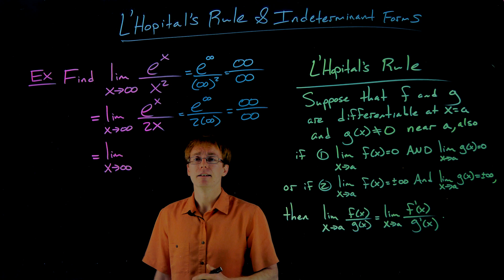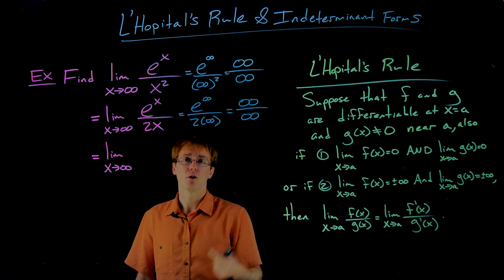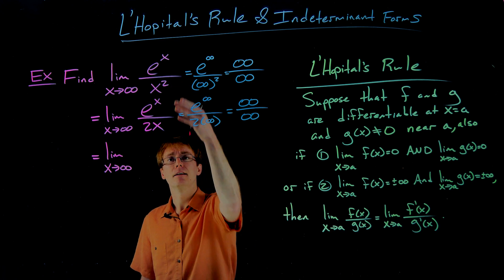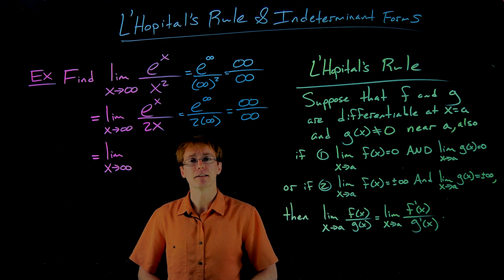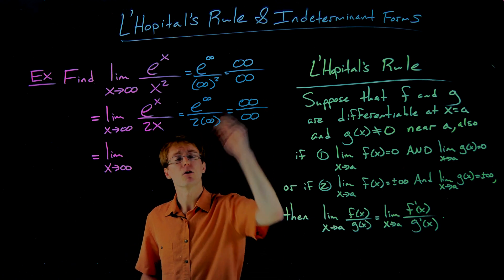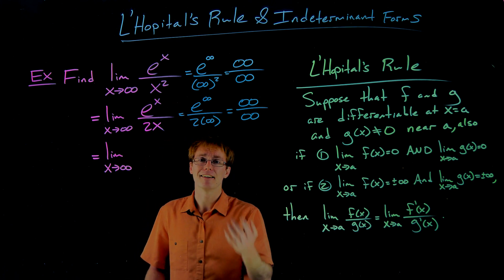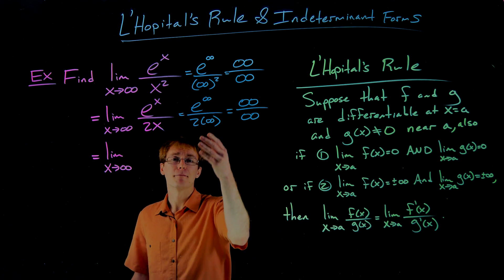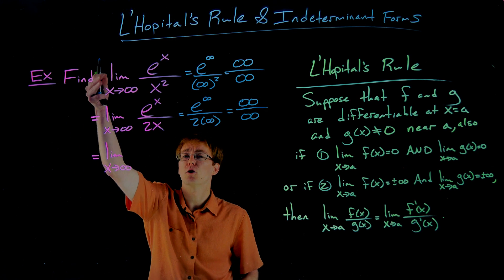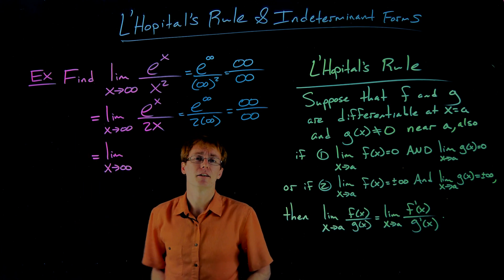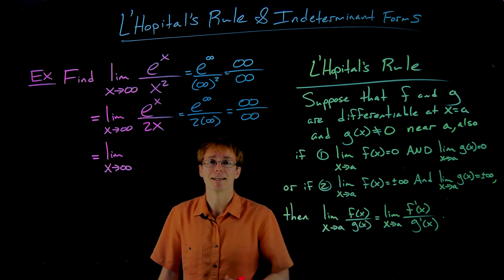The idea is that our original limit gave us an indeterminate quotient. L'Hôpital's rule says that limit is equivalent to the limit as x approaches infinity of e to the x over 2x. But that also gives us an indeterminate form, so we apply L'Hôpital's rule again to find another equivalent limit. We basically have a chain of equivalencies — each new limit is equivalent to the original one. You can apply L'Hôpital's rule as many times as necessary.